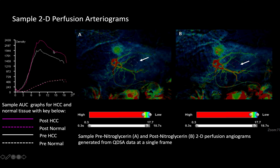The top curve is the post-nitroglycerin administration for the tumor ROI. This is the pre-nitroglycerin tumor ROI. Down here are your normal tissue curves — the pink is the post-normal hepatic parenchyma ROI. You can already tell from here that if you eyeball the area-under-curve ratios and compare the pink area under curve to the white area under curve, there is already an increase.